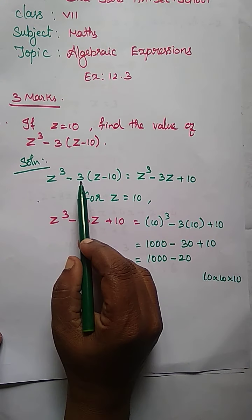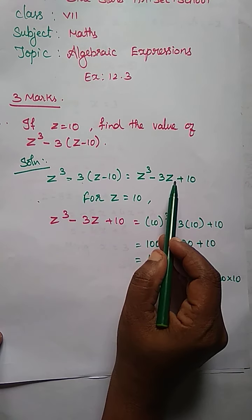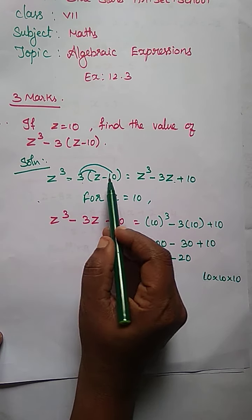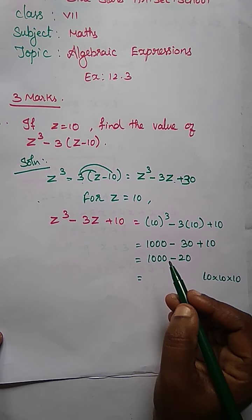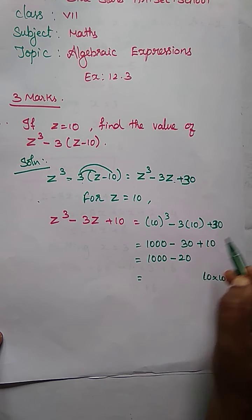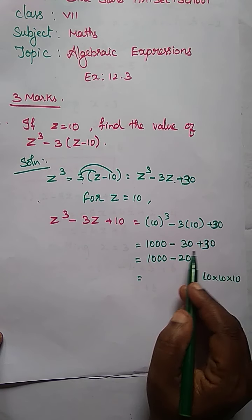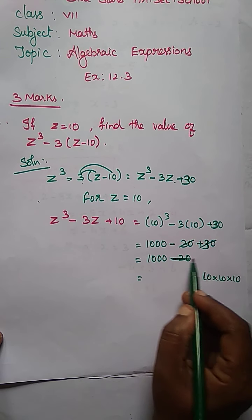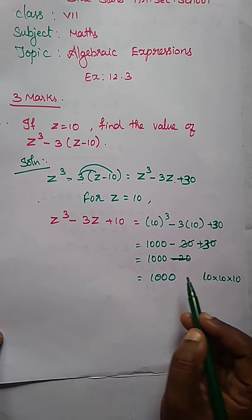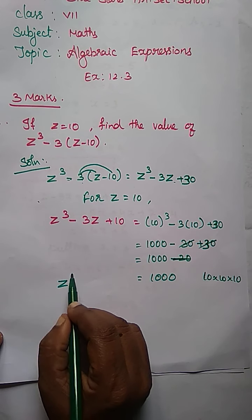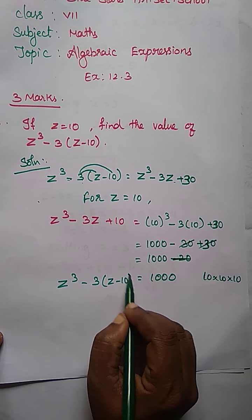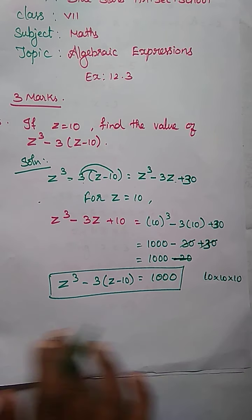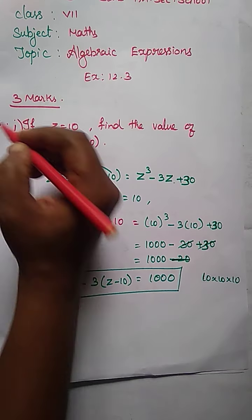Listen — 3 into Z is 3Z, minus into minus plus. So 3 into 10 is 30, not 10. Sorry, 3 tens of 30. Now right here 30, here also 30. Plus 30 minus 30 will be cancelled. Plus 30 minus 30 cancelled. We get the value is 1000. So now Z cube minus 3 into Z minus 10, the value is 1000 is the answer. This is the first subdivision.